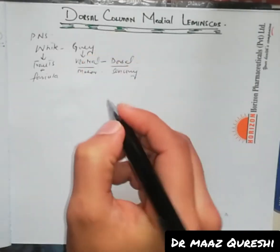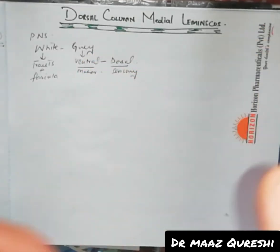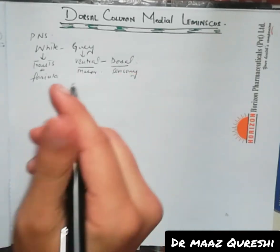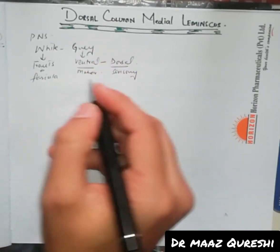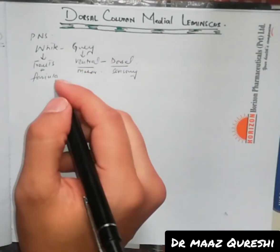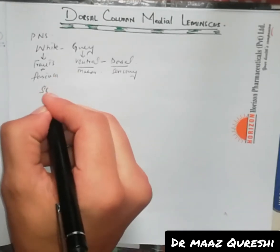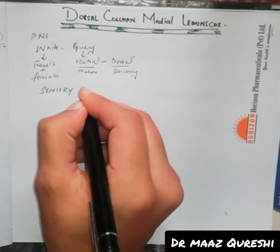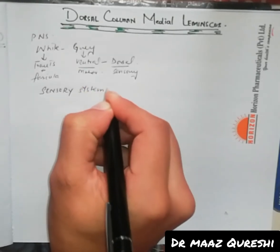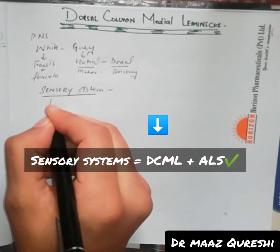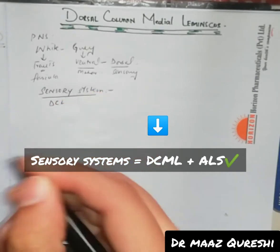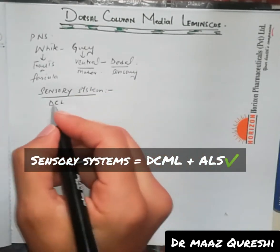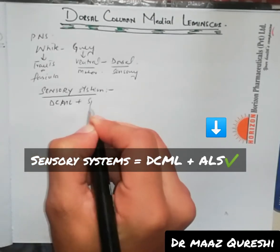Coming to the topic — Dorsal Column Medial Lemniscus, which is very high yield for USMLE and FCPS students. We will talk about the sensory systems, which have two main parts: the Dorsal Column Medial Lemniscus and the Spinothalamic tract. This will be part one of a two-part video series.